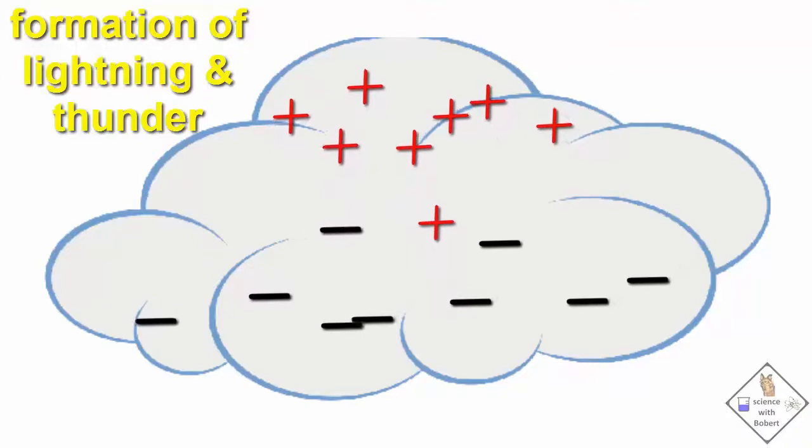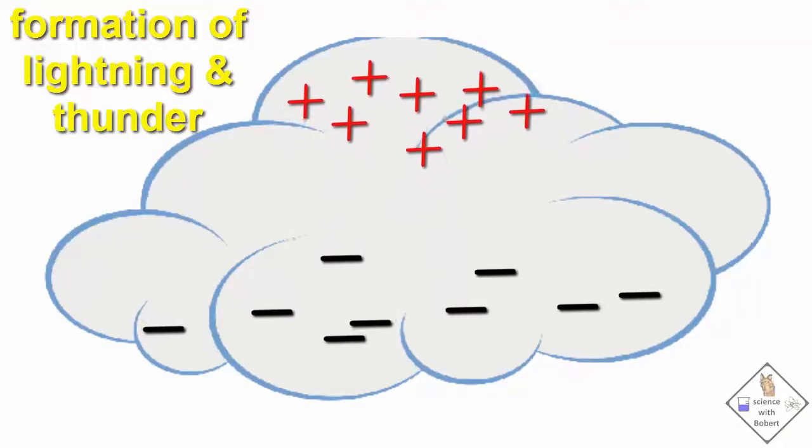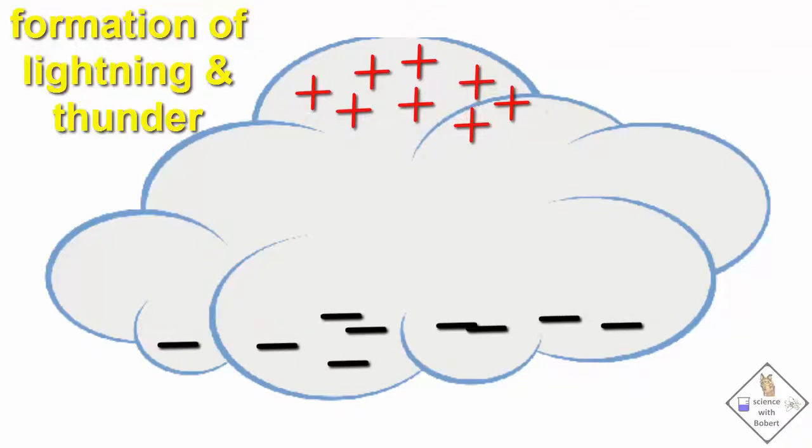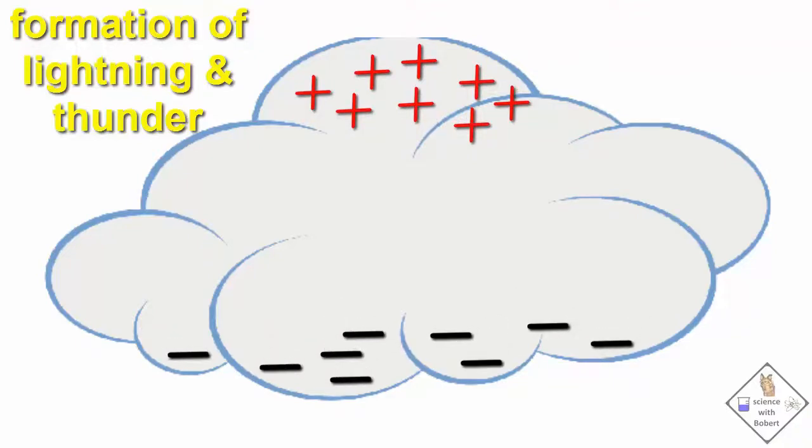Light, positively charged particles migrate toward the top of the cloud, and the heavier, negatively charged particles sink to the bottom of the cloud. When these positive and negative charges build up to a point that air can no longer electrically insulate these two oppositely charged regions, lightning is generated within the cloud.